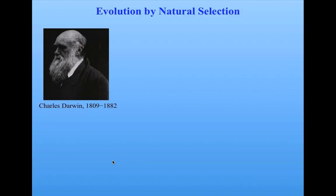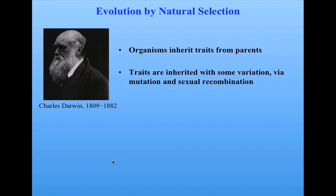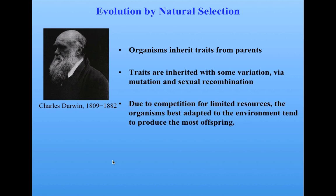Let me start by outlining the basics of evolution by natural selection. First, organisms inherit traits from their parents. The traits are inherited with some variation, via mutation, sexual recombination, and other variation-generating mechanisms. But due to competition for limited resources, the organisms best adapted to the environment tend to produce the most offspring. This was Darwin's insight into the idea of natural selection.